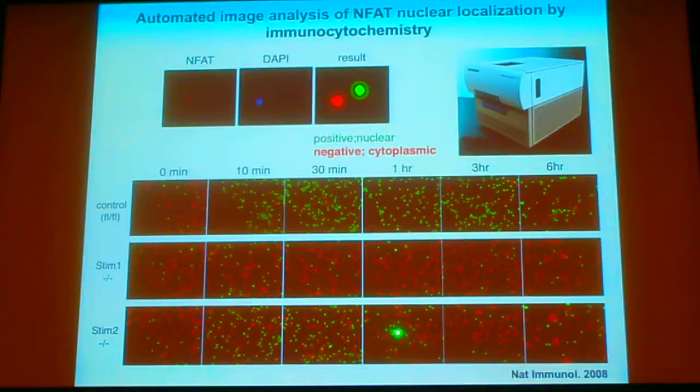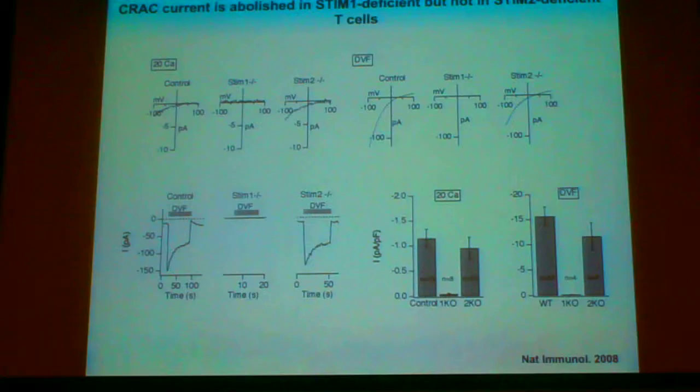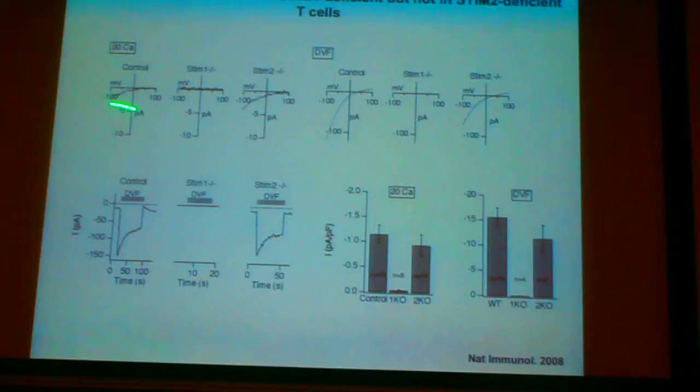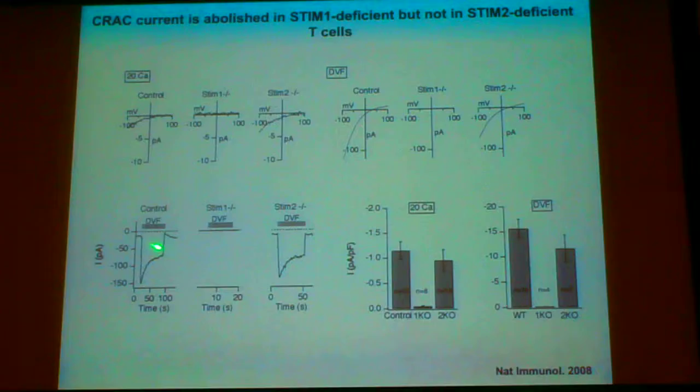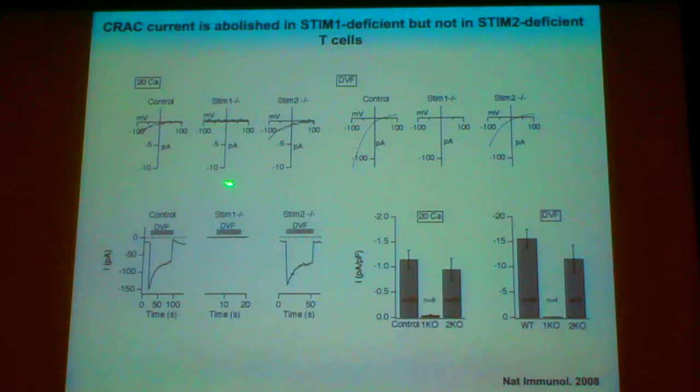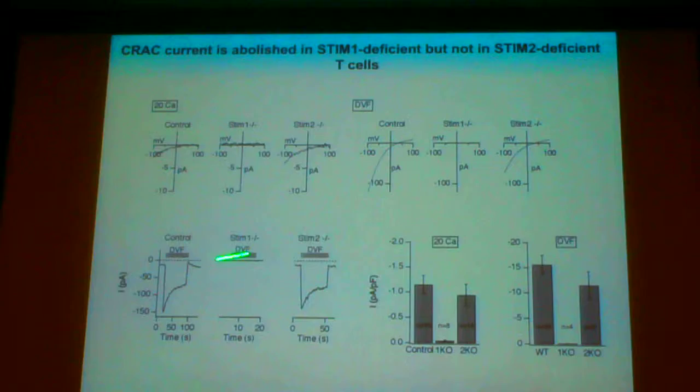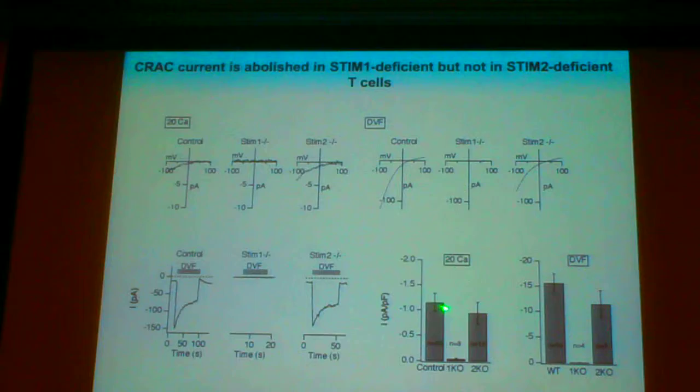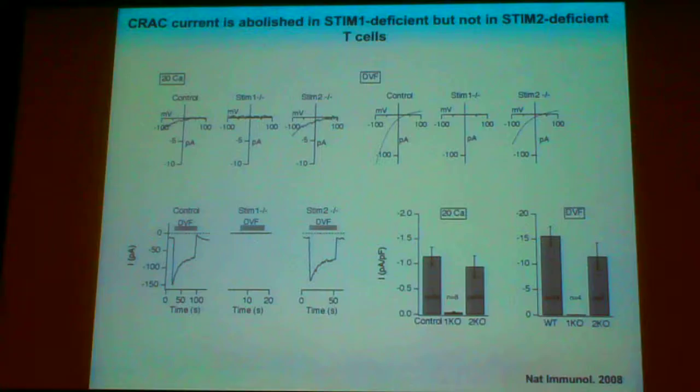As for electrophysiology data, control T cells show the typical inward calcium current and a large sodium current in divalent-free solutions without magnesium and calcium. In contrast, STIM1-deficient T cells show no CRAC current and no sodium current. STIM2-deficient T cells show a very slight reduction of the CRAC current, but this difference does not reach statistical significance.